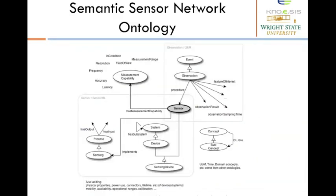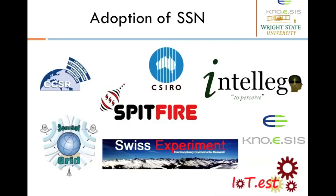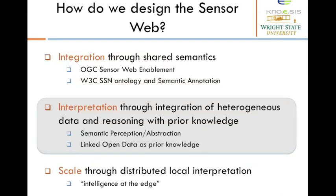Let's see how semantic web is used to model sensors and observations. This is a high-level representation of the semantic sensor network ontology, which consists of concepts and relationships to model sensors and the observations made by these sensors. Many research labs have adapted the semantic sensor network ontology, using it in applications ranging from environmental monitoring, agriculture, health, and smart environments. Now let's look at the next challenge: the interpretation of heterogeneous sensor observations.